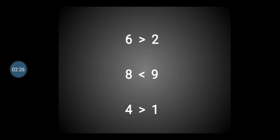6 is bigger than the number 2, so the open end is pointing towards the number 6. 8 is smaller than the number 9, so the closed end of the sign is pointing towards the number 8, which is smaller. 4 is equal to the number 4, so the open end of the sign is pointing towards the number 4.